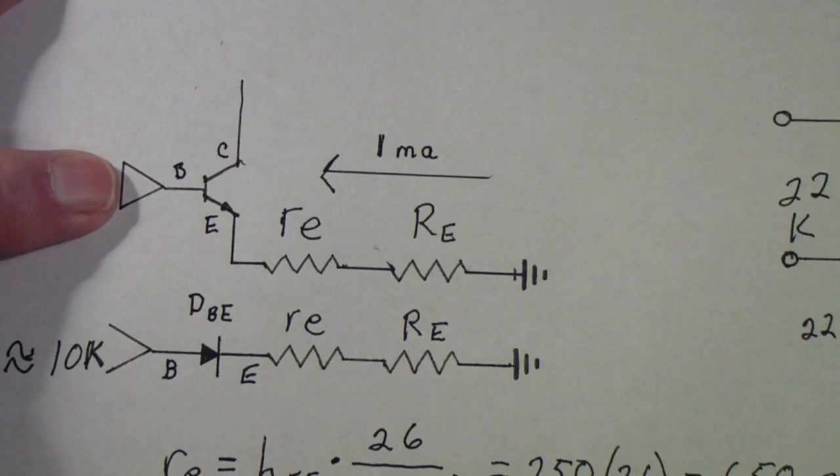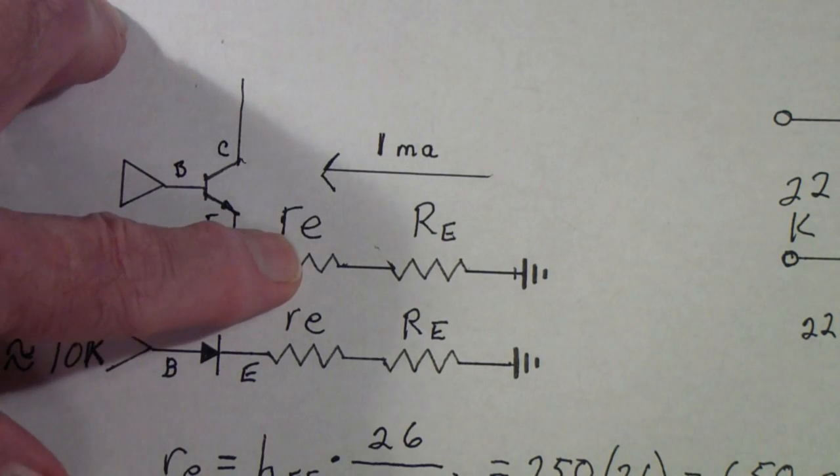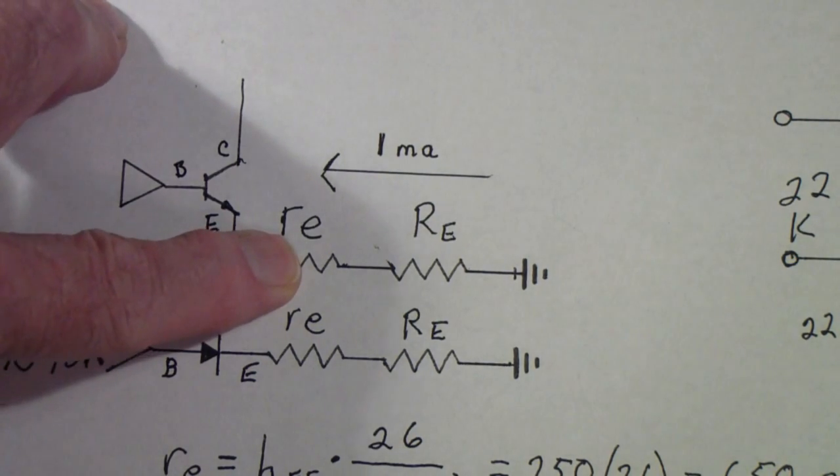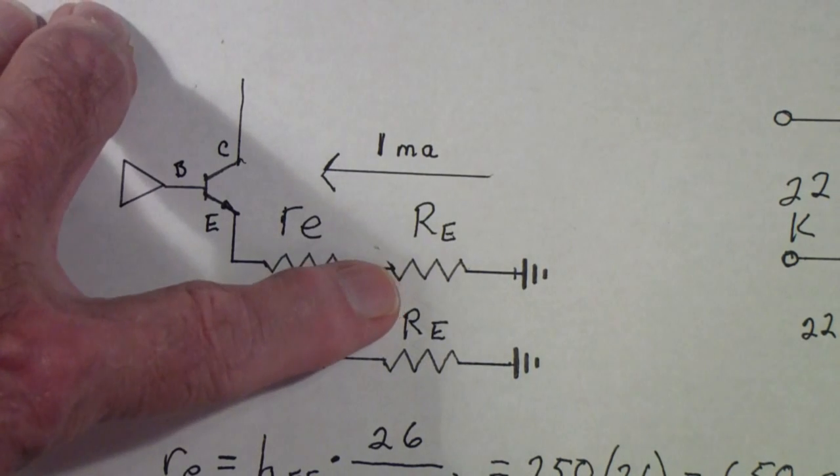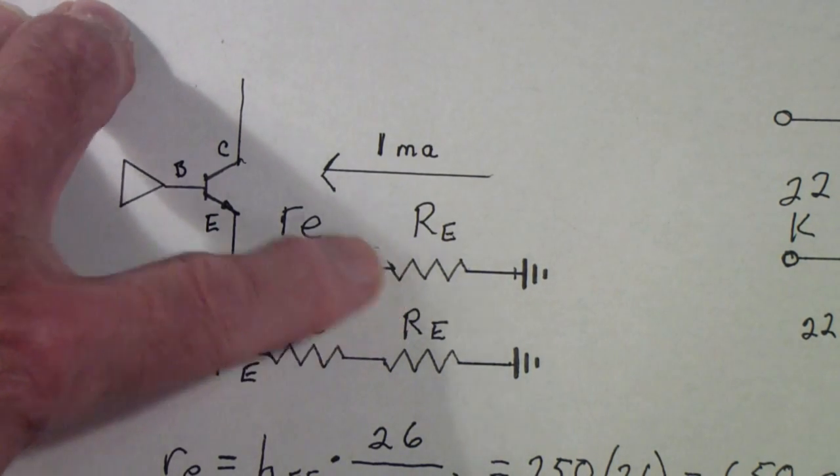Now, when you look into the base of the transistor, you see a resistance that's due to the transistor itself. It's called RE. We've been ignoring that up till now. Then you also see RE, that is the emitter resistor.